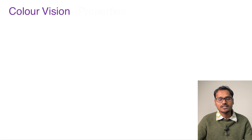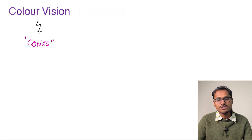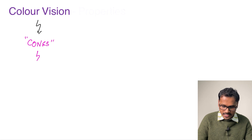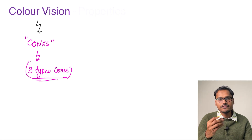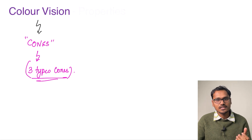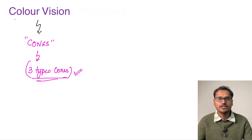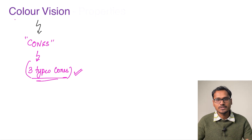Color vision helps us perceive color and it is done with the help of cones. Unlike rods, which are a single type, cones are generally divided into three types. These three types of cones are responsible for different parts of the light spectrum. Just as primary colors mix to form other colors, the three types of cones provide primary color signals, and variations in their stimulation allow a person to perceive different colors.